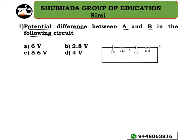You can clearly see that point A is here and point B is here. You need to find out the potential difference between those two points, that is Va minus Vb is equal to how much. That is the question.